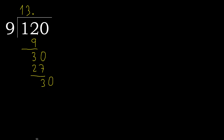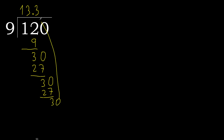30. 9 multiplied by 4 is greater. Multiplied by 3 is 27. Subtract. Complete. The decimal point is here.